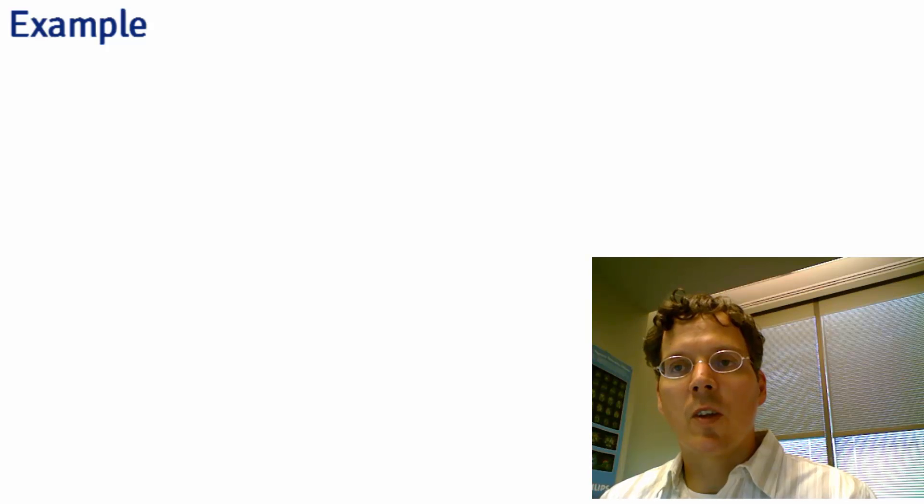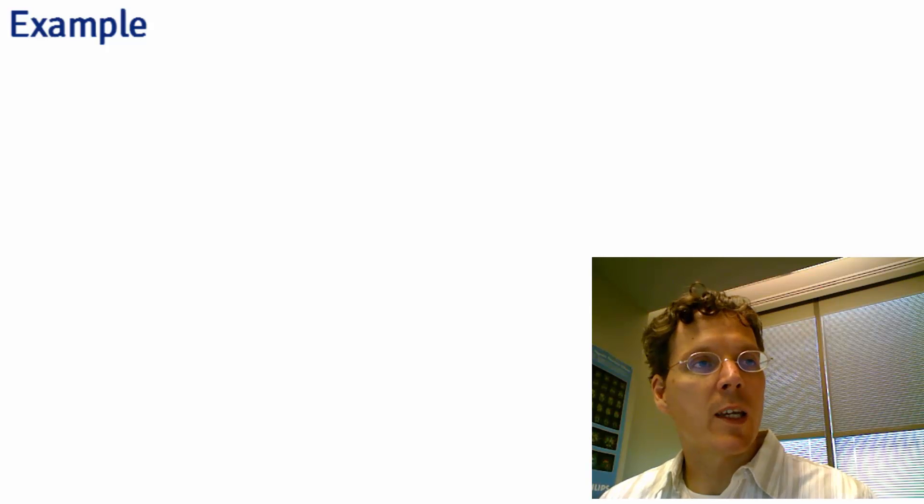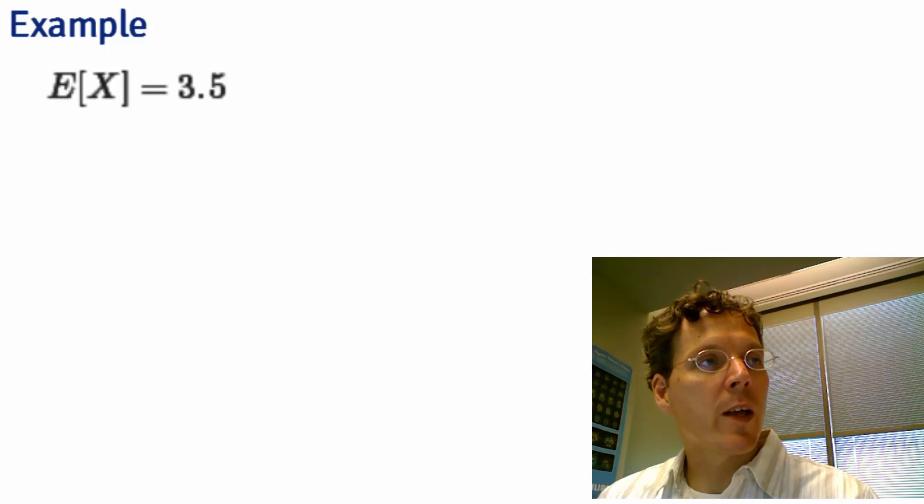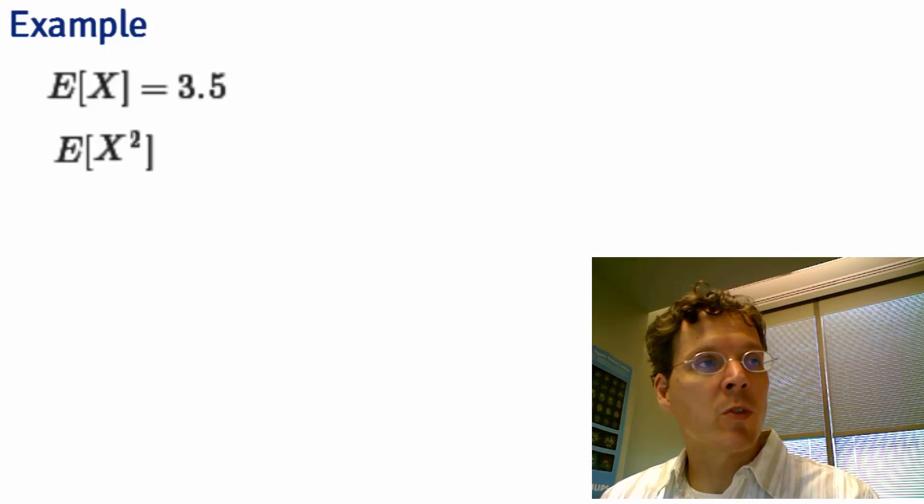In this class we won't spend a lot of time calculating expected values, either means or variances of populations by hand, but I want to go through one such calculation. Recall from the last lecture the expected value of X is 3.5 when X is the result of a toss of a die. The expected value of X squared—think of it as the expected value of the random variable that you get by rolling a die then squaring the result.